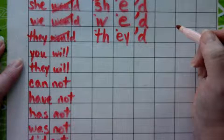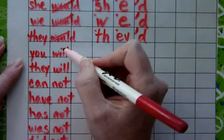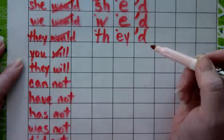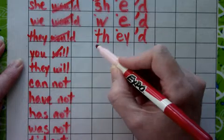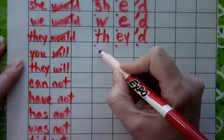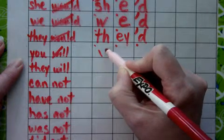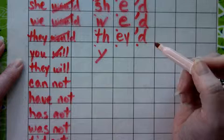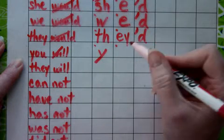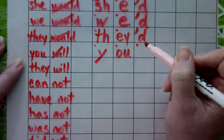The next two words is 'you will.' You'll — we drop the W-I and add the apostrophe L-L. Make the short line and then swoop long, go under the writing line. 'Ooh' and 'you' is spelled Y-O-U.